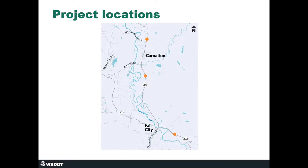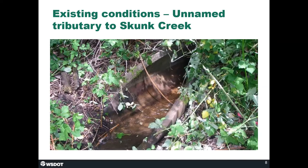The unnamed tributary to Skunk Creek that runs under SR202 is considered completely impassable to fish due to its steep slope. The fish species that use this stream include bull trout, resident trout, steelhead, and sea-run cutthroat.